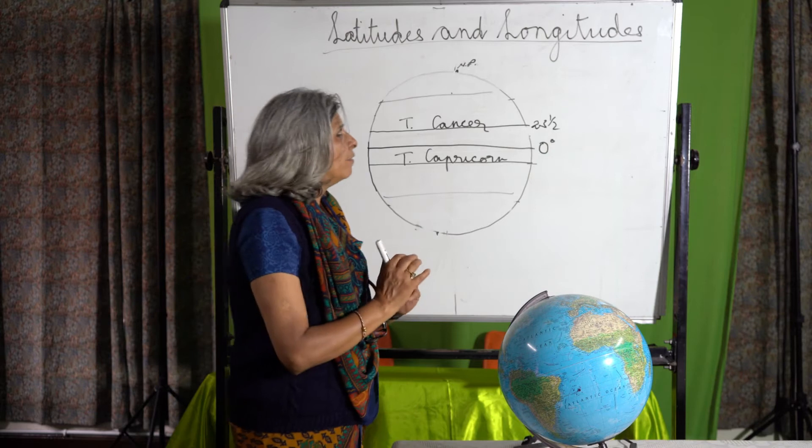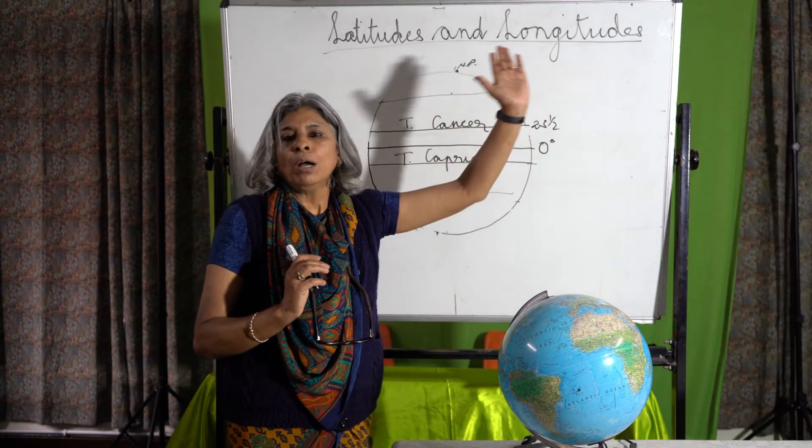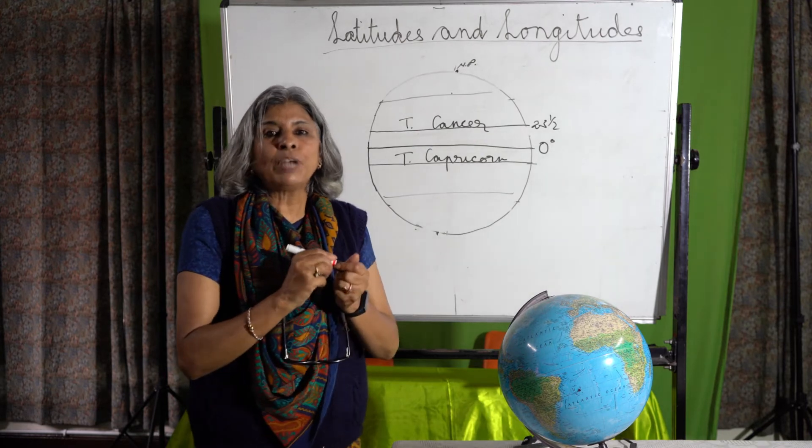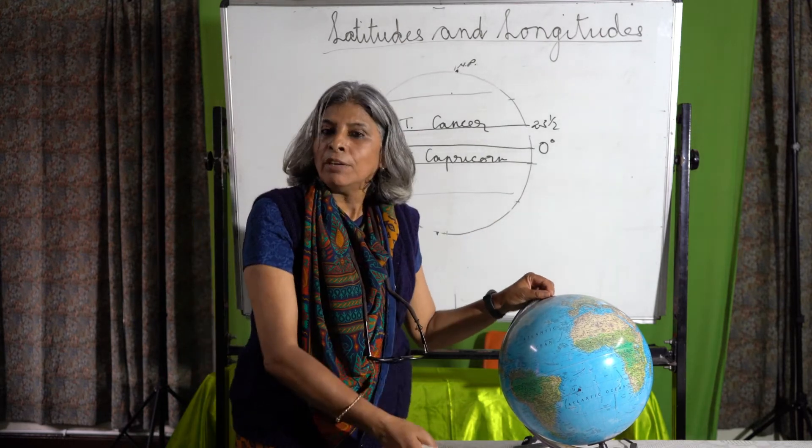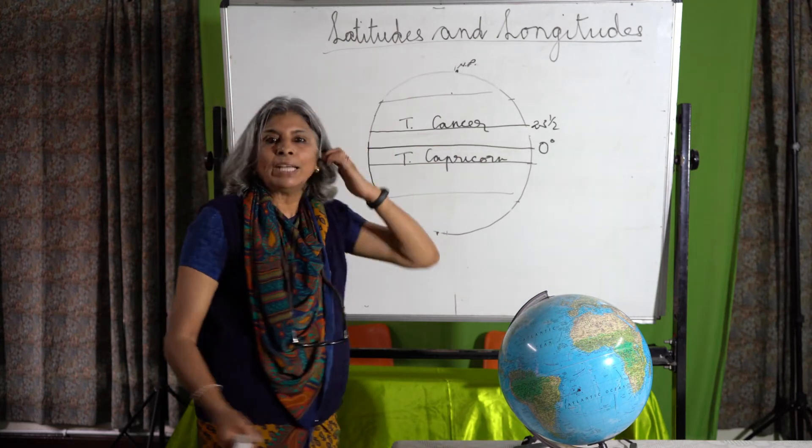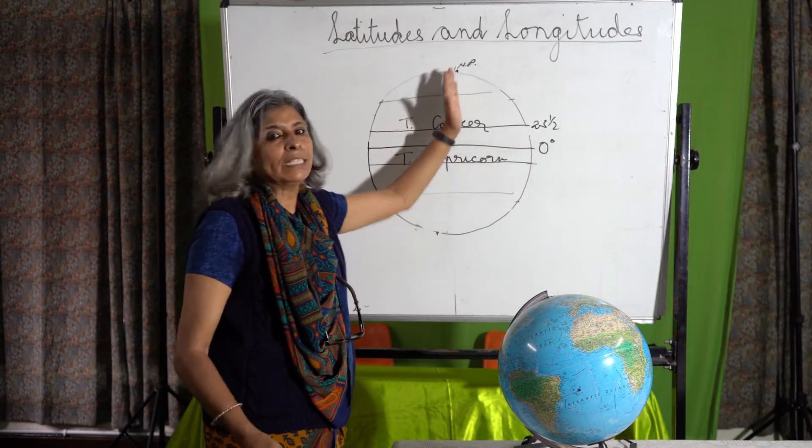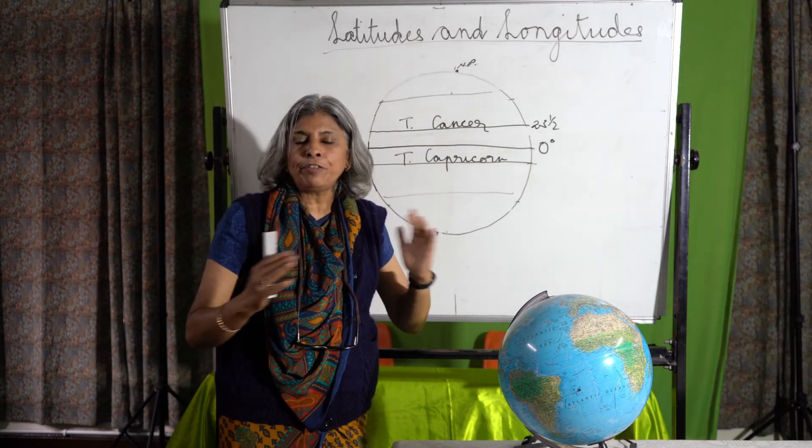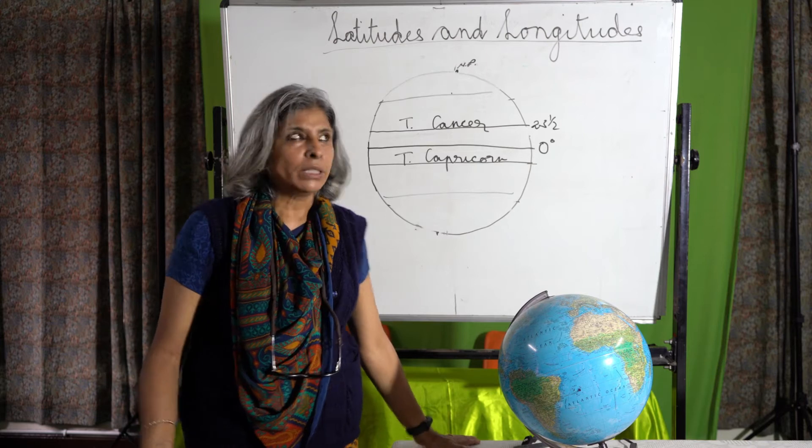Then we have the longitudes. What are the longitudes? These are lines which run north to south from the north pole to the south pole. Like the lines of latitude were parallel, these lines are not parallel. They are very close at the poles and as they move away from the poles, they become broader and broader.